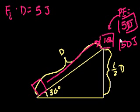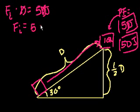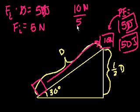So I inputted 5 Newtons of force and was able to lift a 10-Newton object. The mechanical advantage is the force output, 10 Newtons, divided by the force input, 5 Newtons — so the mechanical advantage is 2.